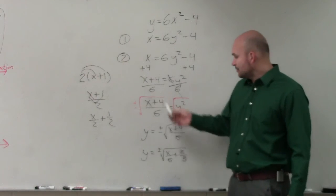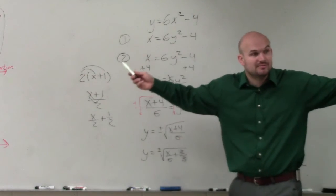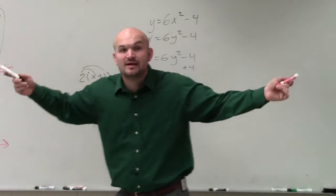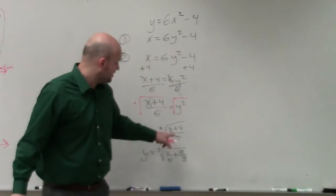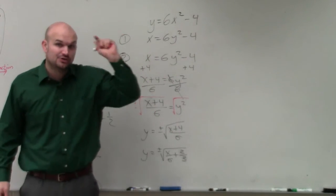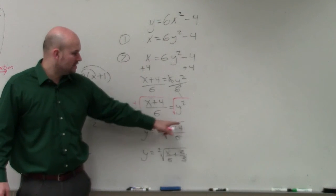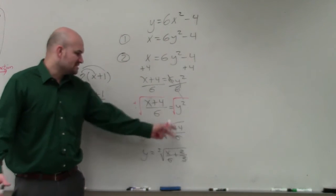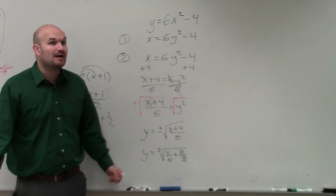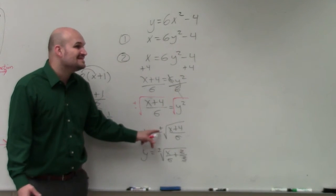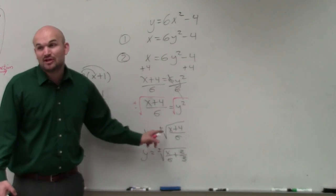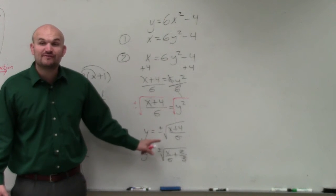So what I'm trying to say is for every x value, let's just pick an x value, the easy x value. Let's pick 0. If I was to plug 0 into this equation, am I going to get uniquely one y value out? So if you plug in 0, 0 plus 4 is 4, 4 over 6, you have the square root of 4 over 6. However, you have to do plus and minus. Is plus or minus going to give you two different answers?